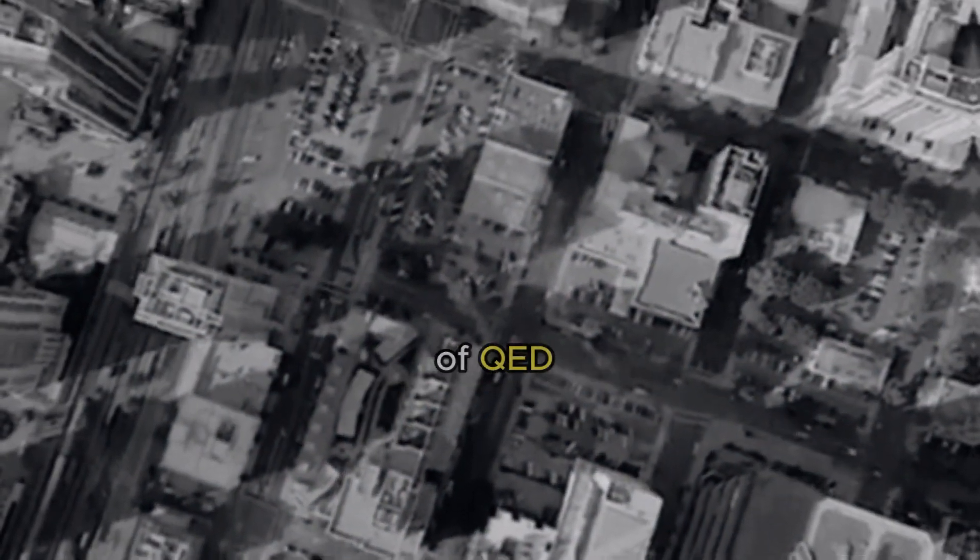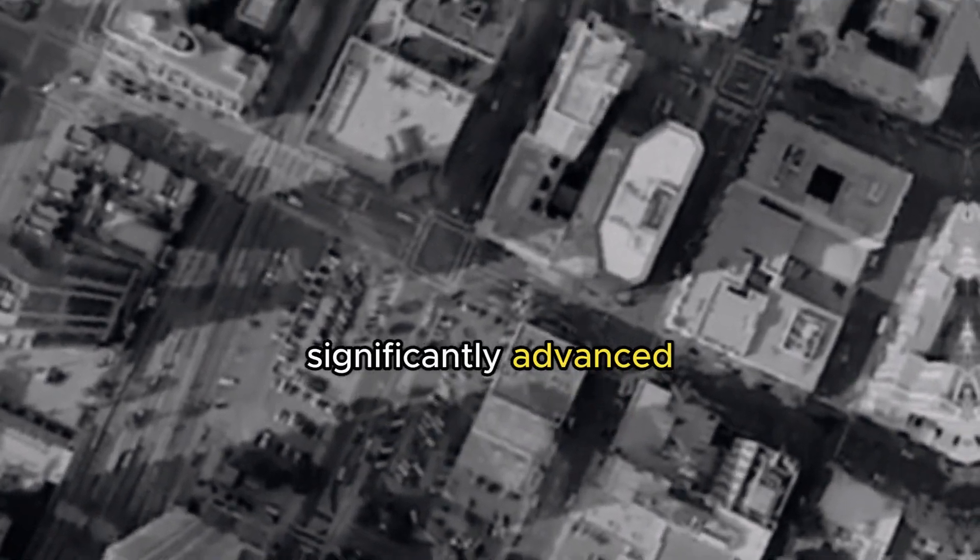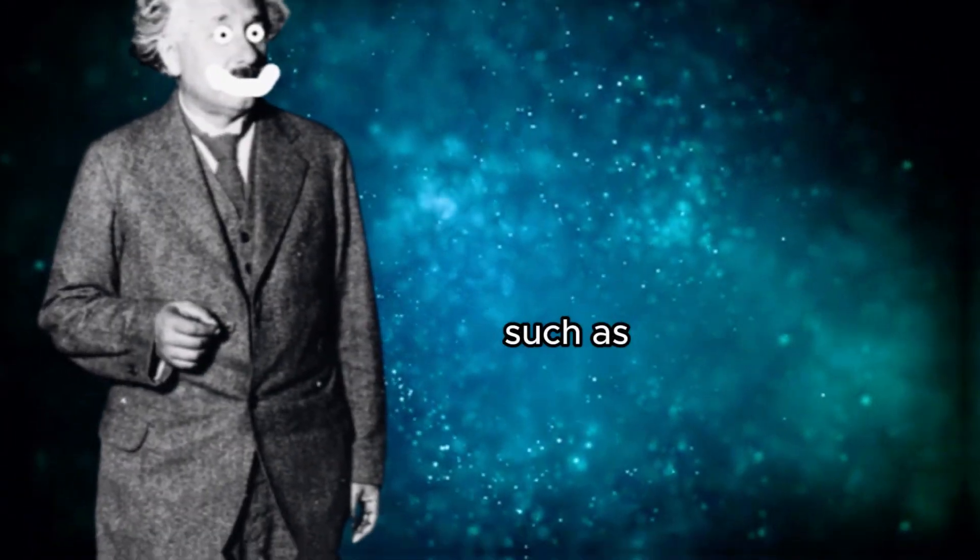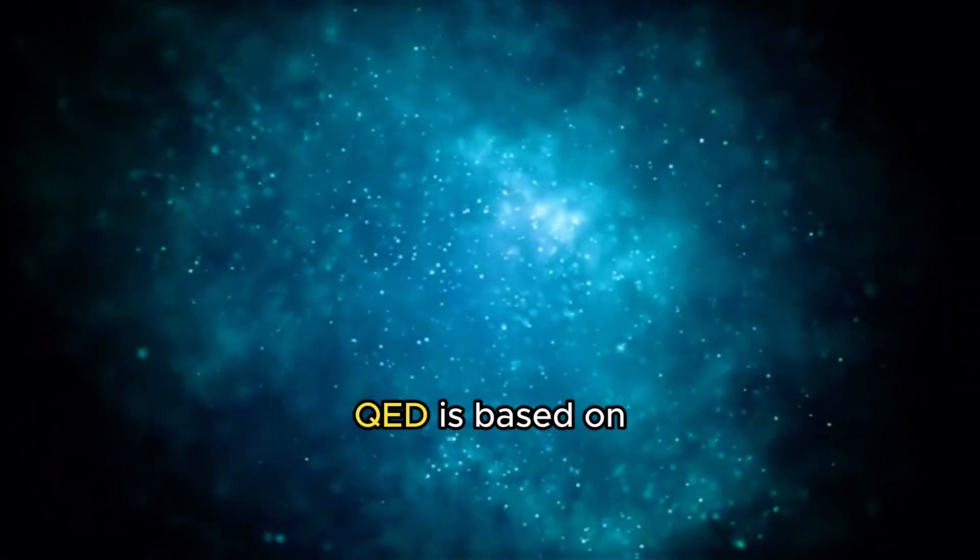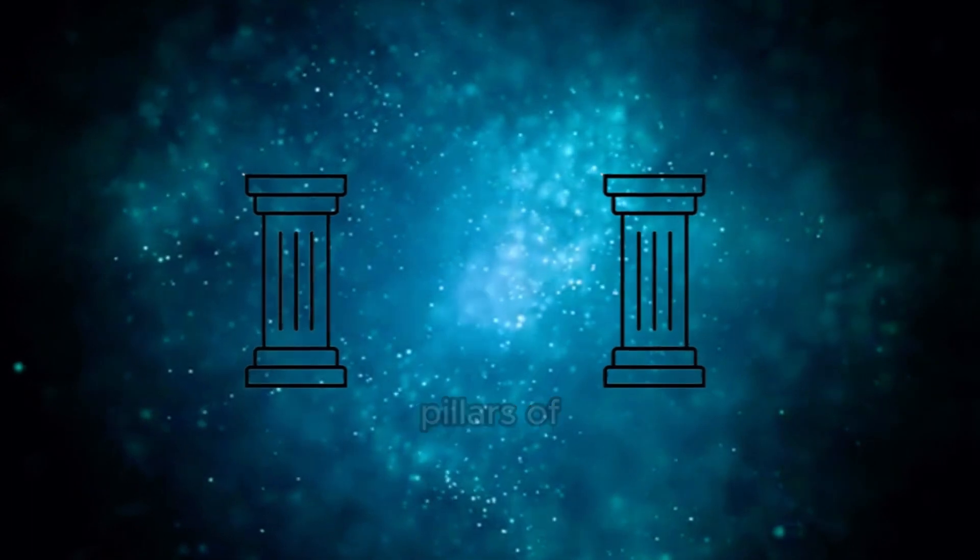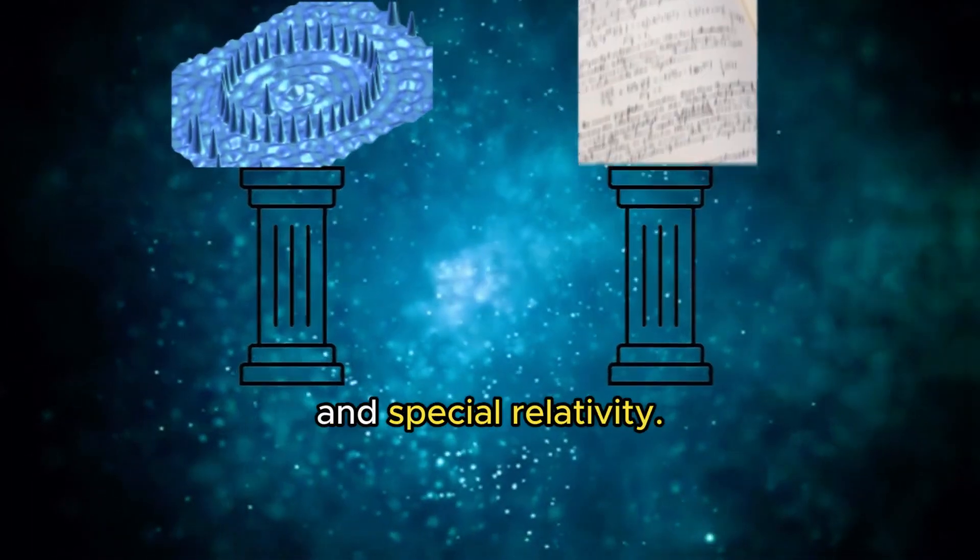The development of QED began in the 1930s and was significantly advanced in the 1940s by physicists such as Richard Feynman, Julian Schwinger, Sinatiro Tamanaga and Freeman Dyson. QED is based on two fundamental pillars of modern physics, quantum mechanics and special relativity.